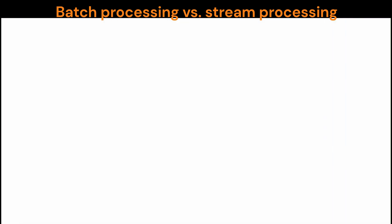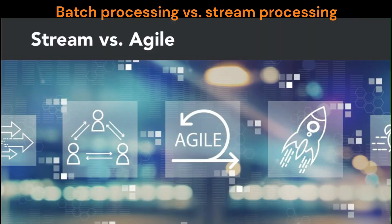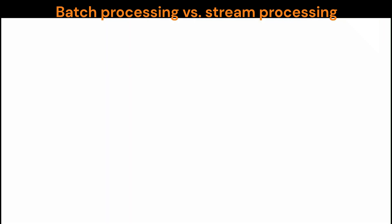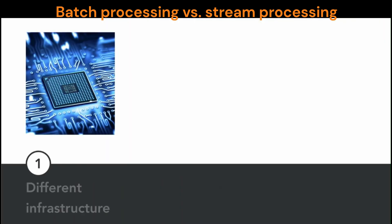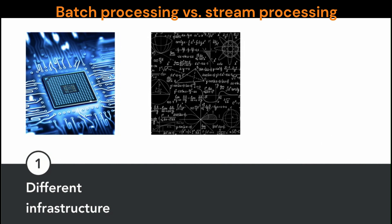I want to make one important distinction. Everybody likes an organization that operates efficiently and responds well to changing situations — that's one reason why agile development and management are so popular. There may be an automatic preference for a data approach that seems speedy and responsive. But stream processing isn't better — it's not a new and improved version of batch processing. It's a different process. Streaming data and analysis often relies on a different infrastructure, different kinds of storage systems, different kinds of databases, and different ways of incorporating that data.